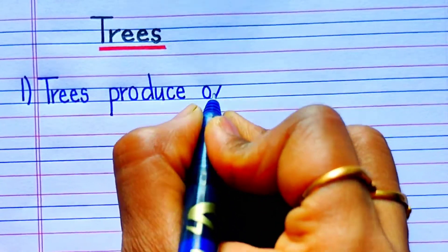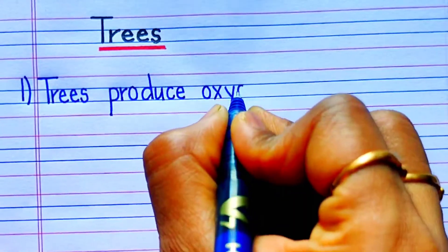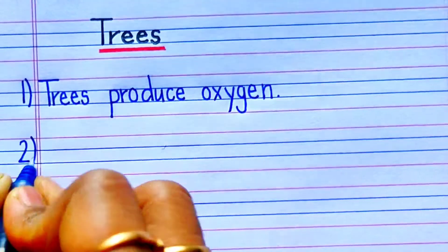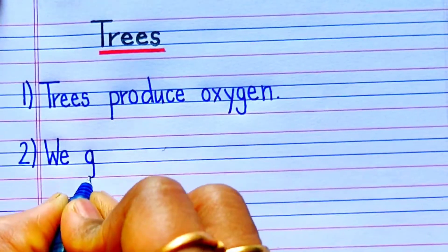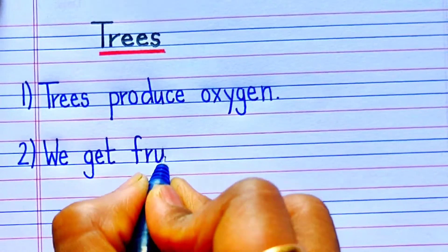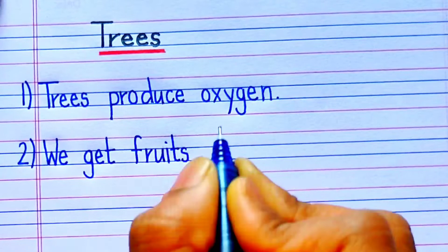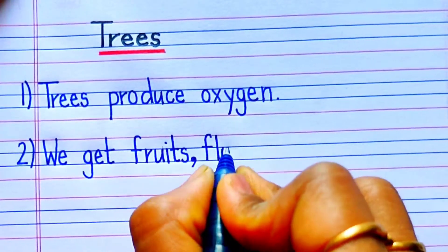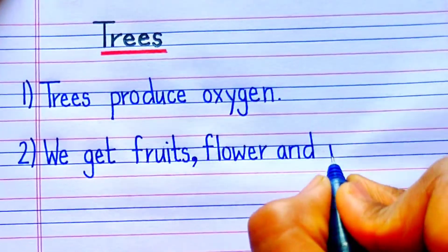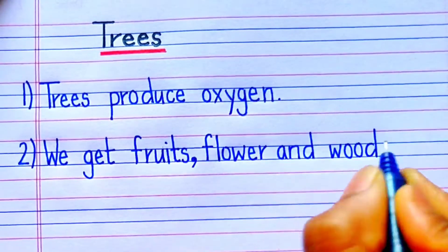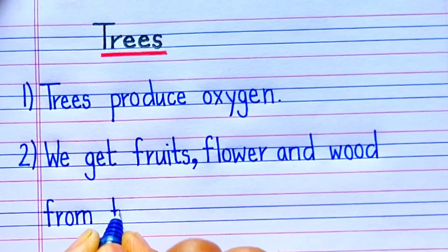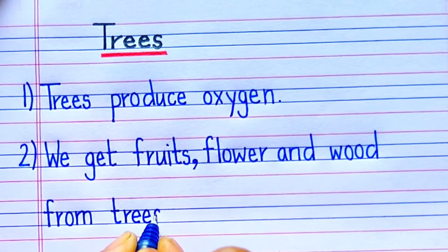The first sentence is: Trees produce oxygen. The second sentence is: We get fruits, flower and wood from trees.